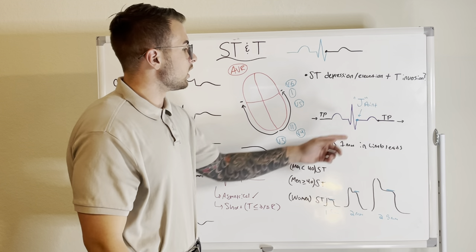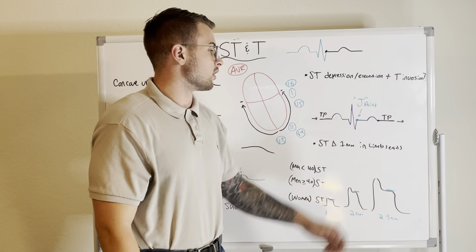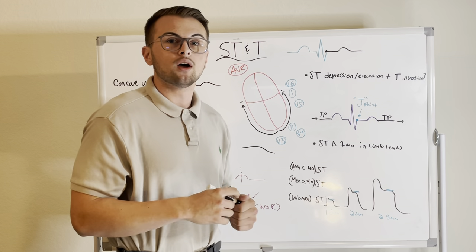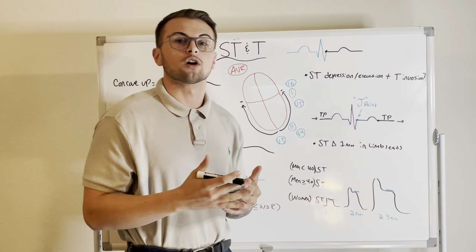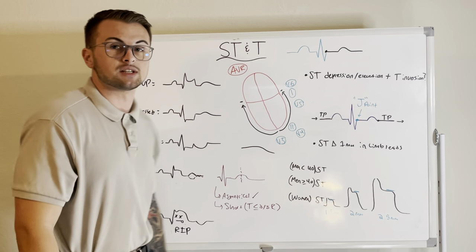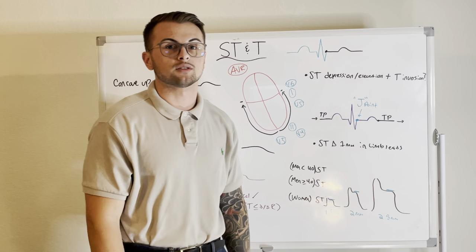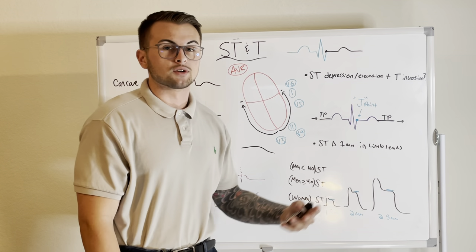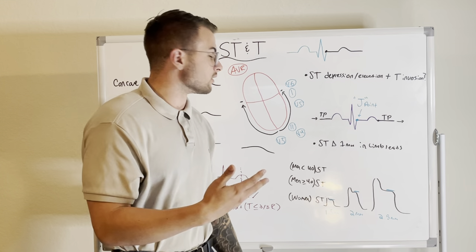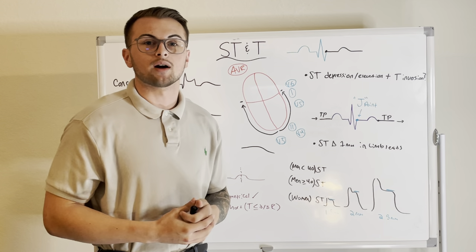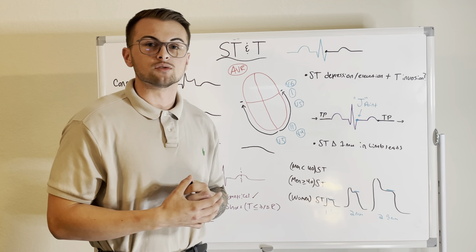The end of the QRS complex is called the J point — the division of our QRS complex from our ST segment. The J point can tell us different information about how healthy our heart is. It's usually sharp, but if it's rounded or undefined, like we'll see in tombstone patterns, it could indicate an early repolarization pattern common in younger people, or it could be a sign of strain, pericarditis, or even an acute myocardial infarction.